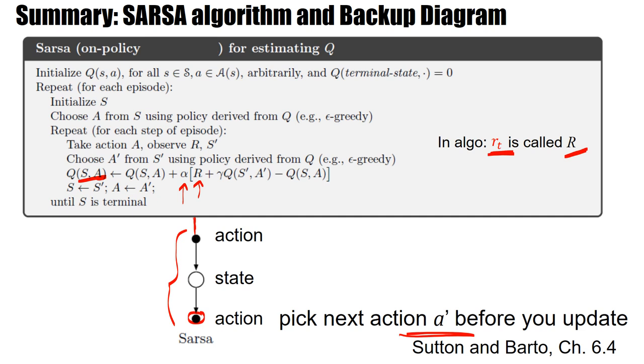In summary, the backup diagram gives a short pictorial representation of how much information you have to keep in memory before you can update the Q value that is in memory. The relevant variable is the Q value here. This is the one we want to learn. And we need to go to the next state and next action before we can update the Q value up here.